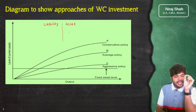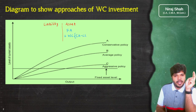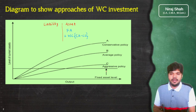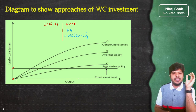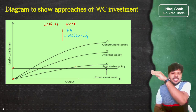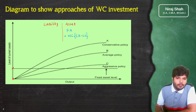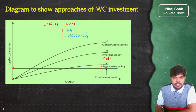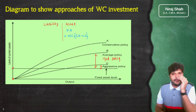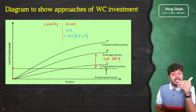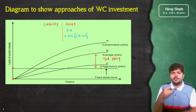Diagram में देखें — fixed assets का level fixed रहेगा। Aggressive policy में working capital बहुत ही कम रखते हो, fixed assets और working capital का gap बहुत कम है। Average यानि moderate policy में working capital aggressive से थोड़ा ज्यादा है लेकिन conservative से कम है — aggressive में debtors कम और cash balance कम, लेकिन moderate policy में थोड़ा ज्यादा cash balance रखते हो safety के लिए।